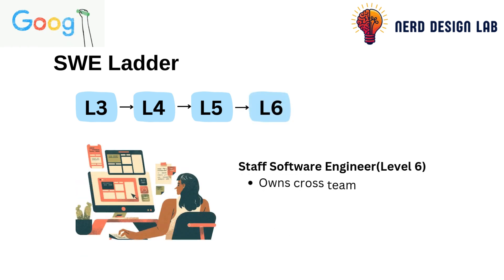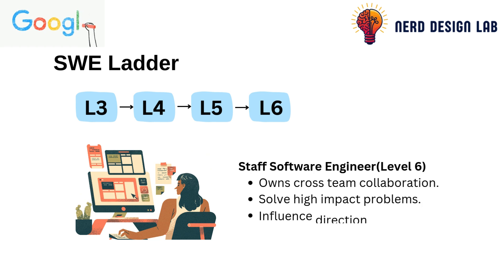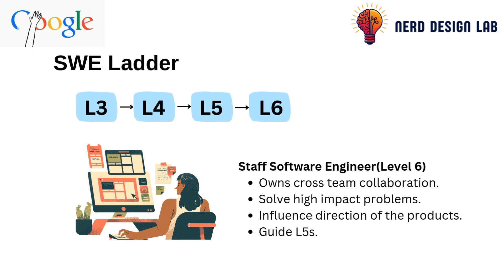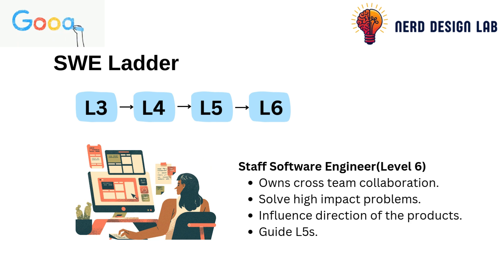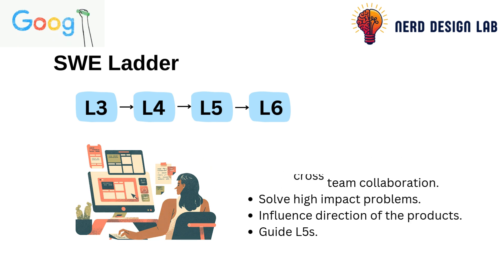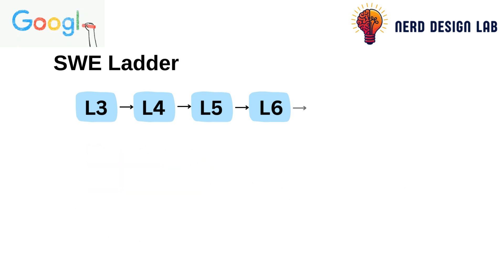L6 is the staff software engineer role. At this level, your focus shifts to cross-team collaboration and solving high-impact problems. You're not just writing code — you're influencing the direction of products and guiding other senior engineers.